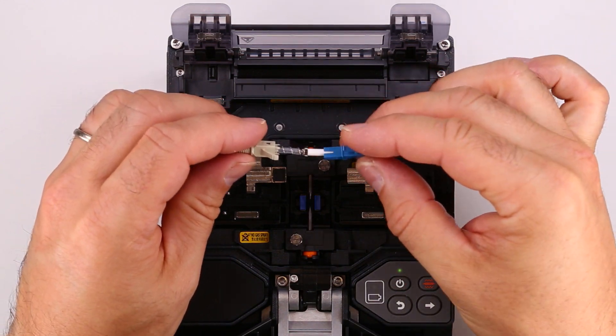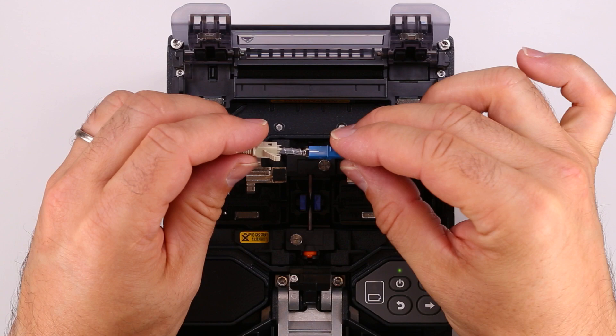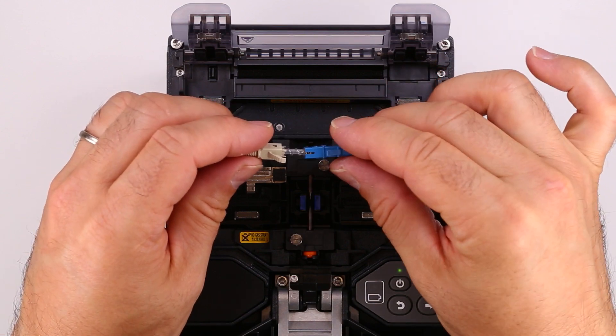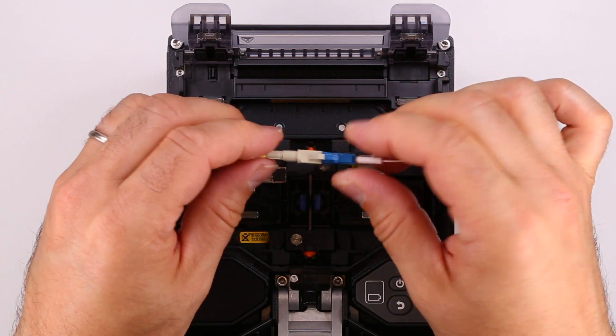For APC connectors, make sure the red dot on the ferrule hub aligns with the latch on the connector. Push the housing into the rear body until they latch together.